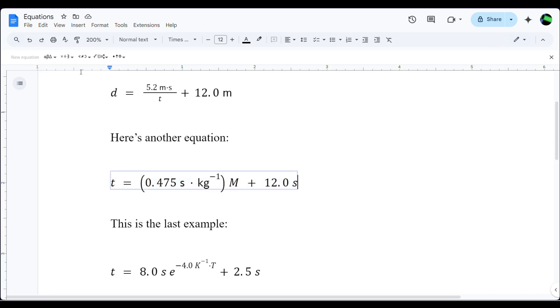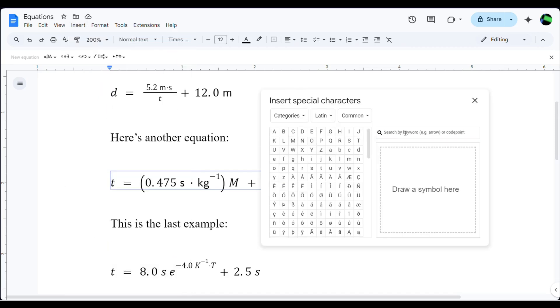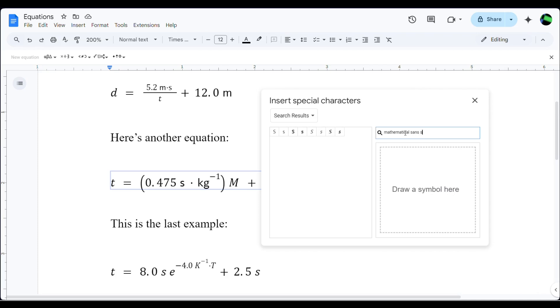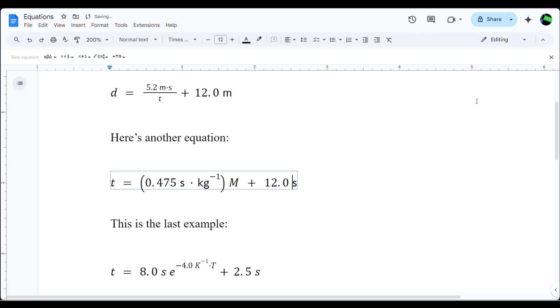This S at the end of the equation should not be italicized. So again, Insert Special Character, mathematical sans S. That's more along the lines of what IB is looking for.